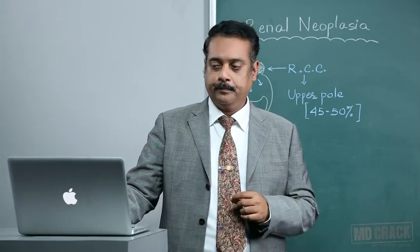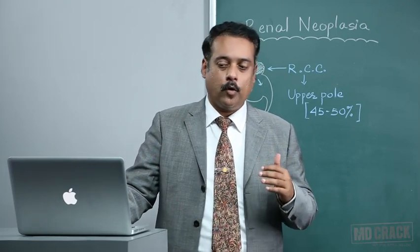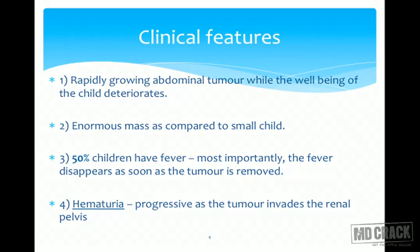Clinically, Wilms Tumor is a rapidly growing abdominal tumor, and the mass is quite enormous compared to the small child suffering from it. 50% of children will have fever as the most prominent feature; as fever disappears, the tumor is considered to be resolved, so fever has a good prognostic indication. Hematuria progresses as the tumor engulfs the renal tissue — initially from the collecting system into the renal parenchyma and eventually the entire kidney — presenting as painless and progressive hematuria.